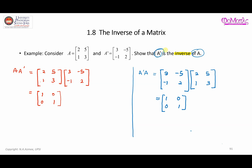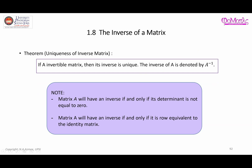We can say that A' is the inverse of A. Regarding uniqueness of the inverse matrix: if A is an invertible matrix then its inverse is unique — there is only one particular solution. Therefore the inverse of A is denoted by the notation A⁻¹.